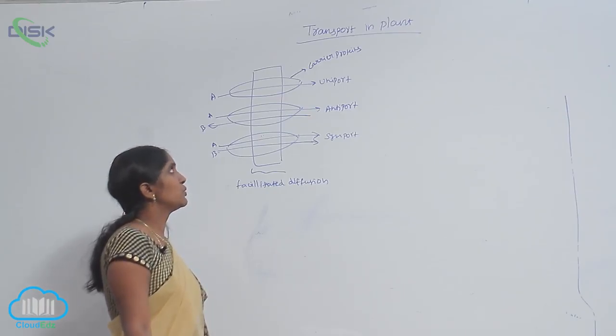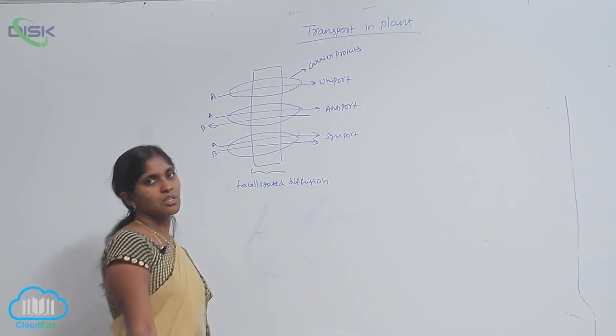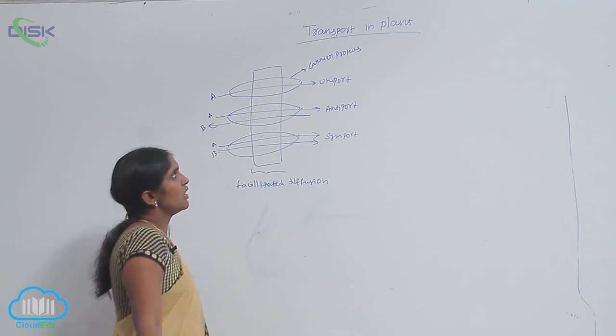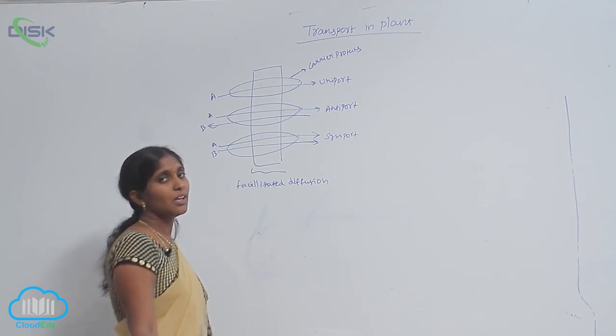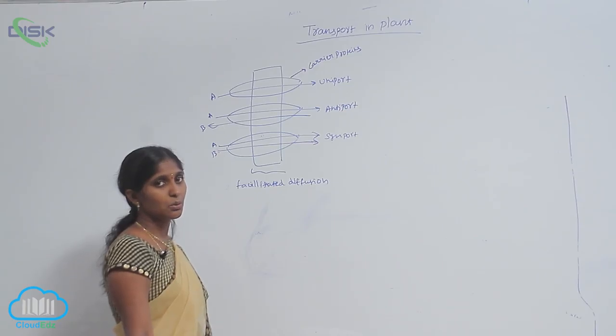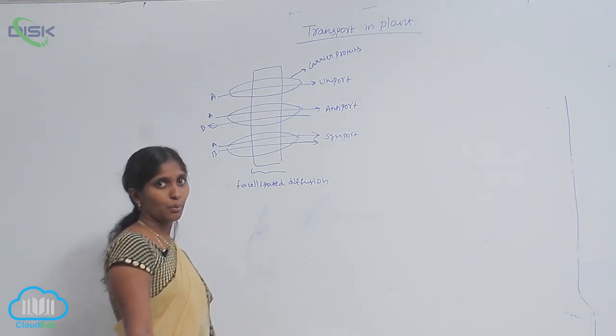During facilitated diffusion, carrier proteins work out. The carrier proteins allow the transport of substances. If they allow the single type of substances into unidirection, the type of the transport is called uniport.